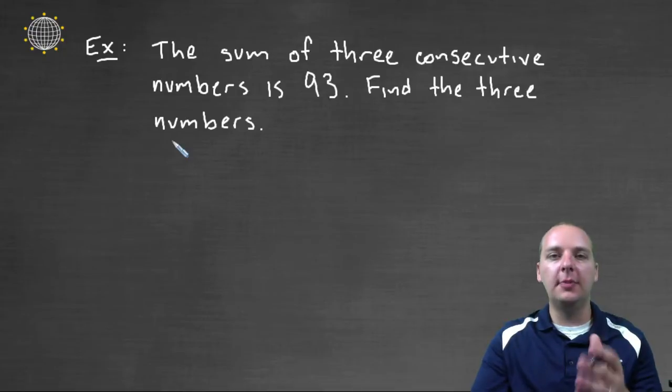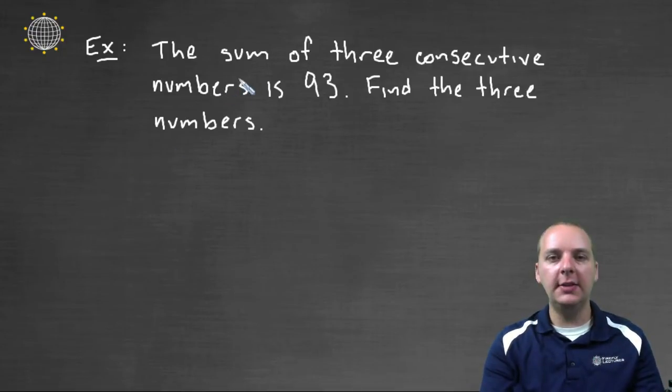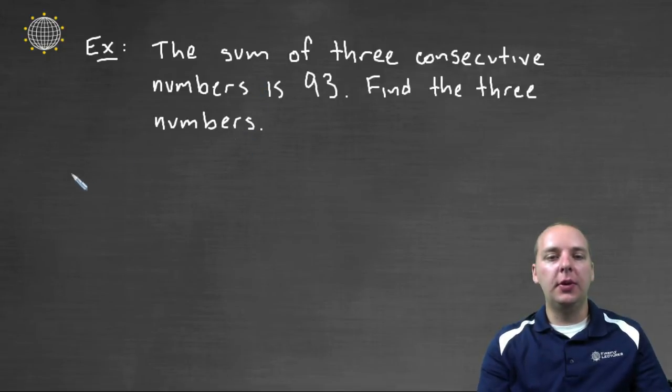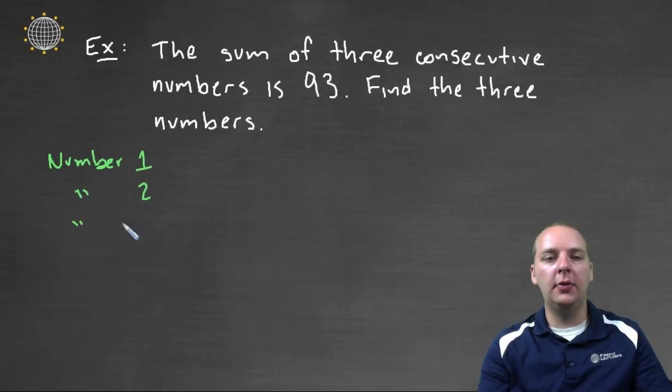So if we go through the steps, if you remember the steps we mentioned in a previous video, step one is to identify what your unknowns are. Now I think our unknowns are clear. There are three consecutive numbers. So if we wrote these out we'd have number one, two, and three.